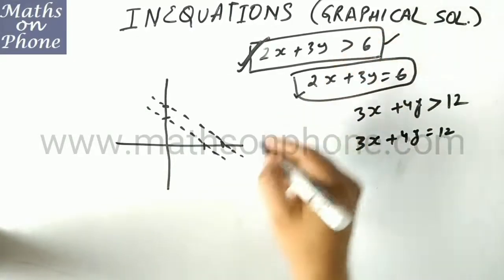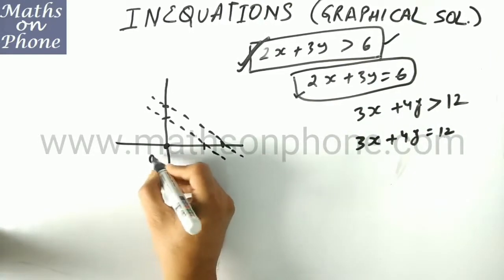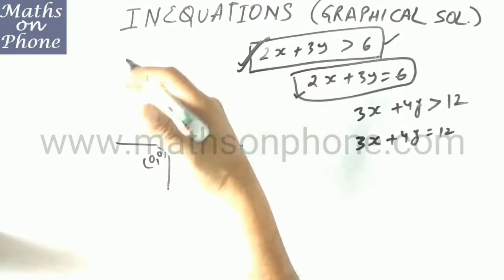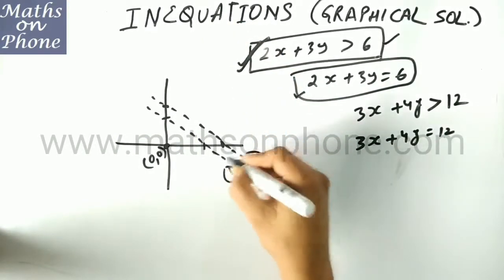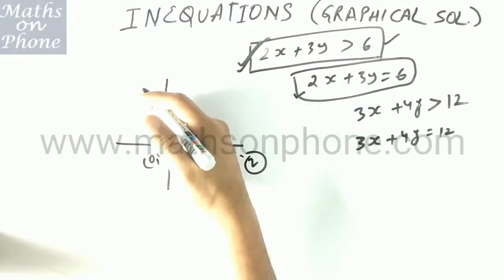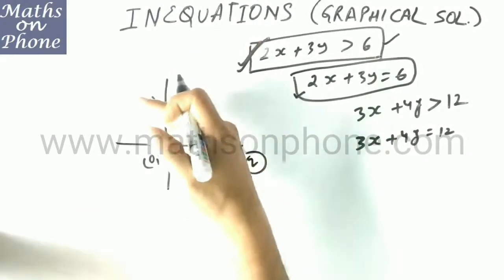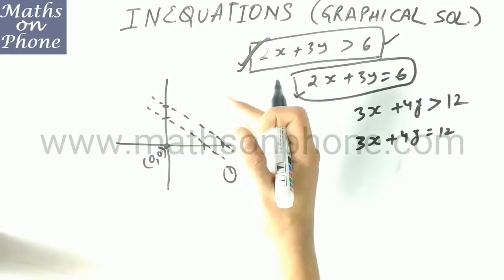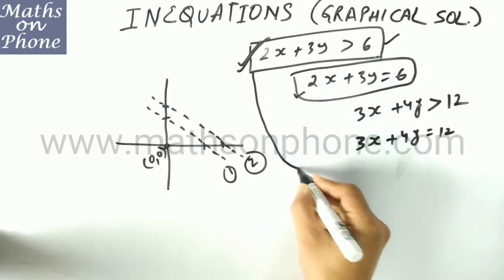Now we will see the inequation portion. I am giving you a technique: just take the origin, that is (0, 0), as a reference point. A line has two sides — either downward or upward. You just need to understand this very important thing: either we have to shade the region which contains the origin, or the region which does not contain the origin. That can be decided by putting the coordinates of origin into the inequation.